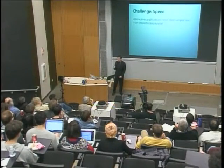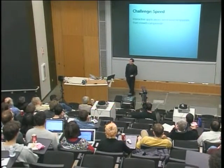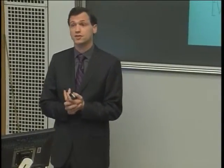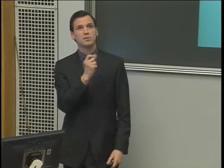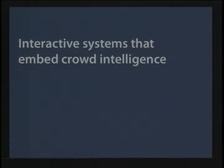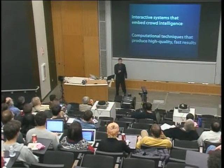A second challenge is speed or latency. If we're building interactive applications, you need fast response. But if you look at how quickly crowds have acted in the past, papers say things like 'extremely fast, 48 hours' or 'cheap and fast, 190 hours.' This is not embeddable in interactive computation. Some folks at Berkeley ran survival analysis and found that the half-life of wait time ranges between two days and 12 hours, depending on how much you're paying. What I'll talk about are crowd-powered systems — interactive systems embedding crowd intelligence — using computational techniques that produce high-quality and fast results.